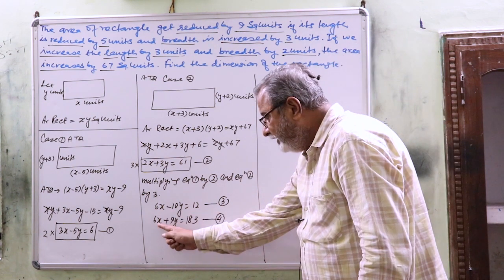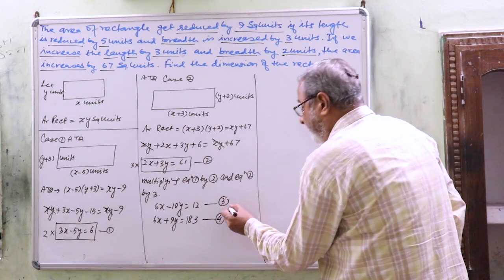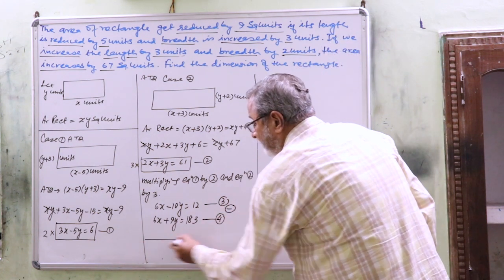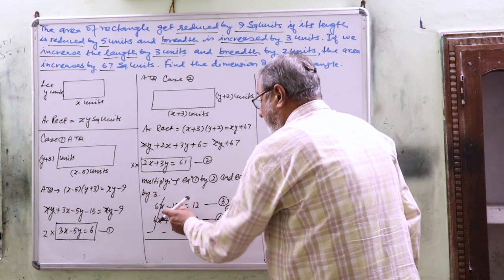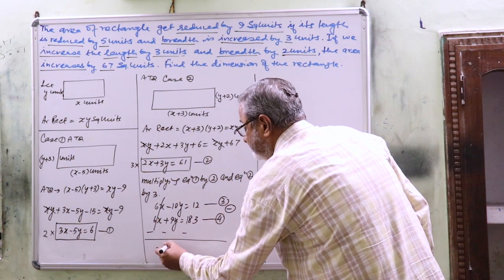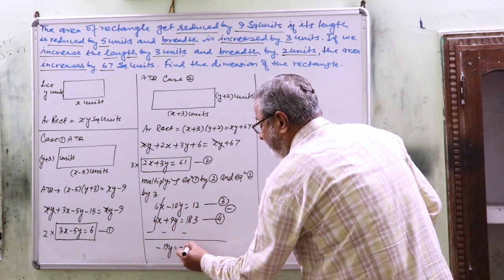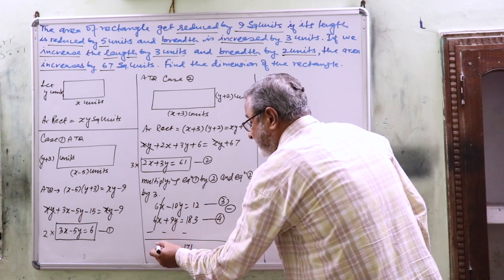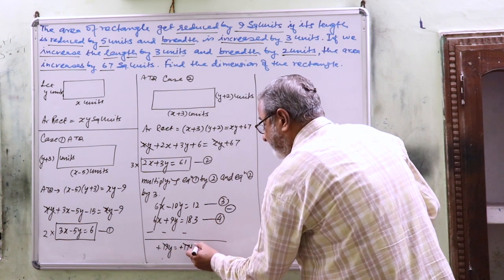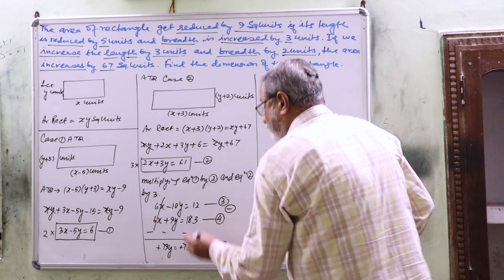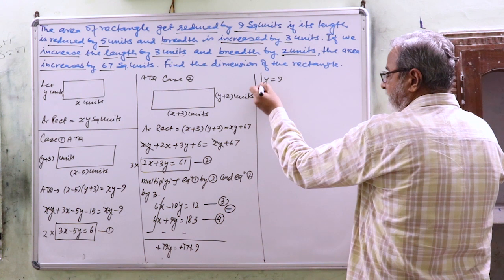Since the coefficients of x are equal, I will subtract equation 4 from equation 3. Subtracting gives minus 19y equals minus 171, so y equals 9. I have got y equals 9.